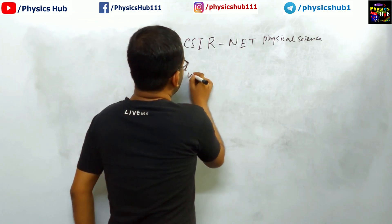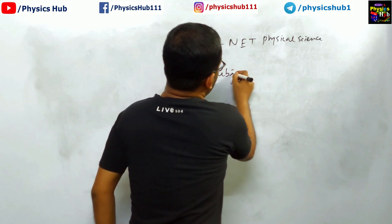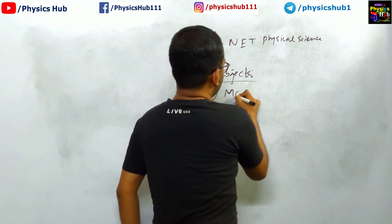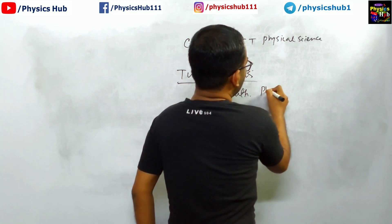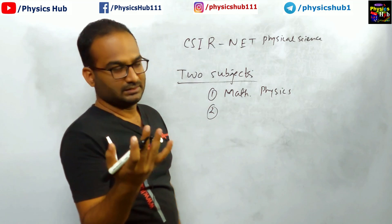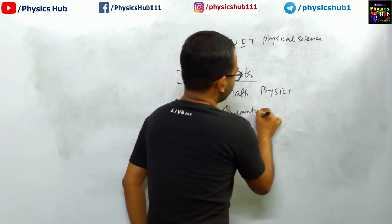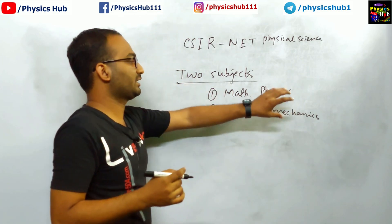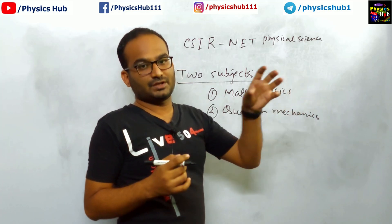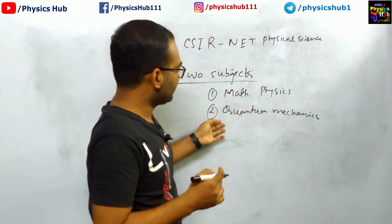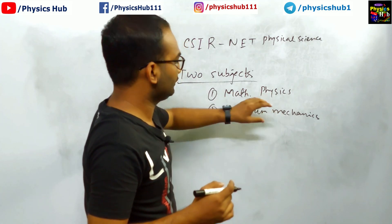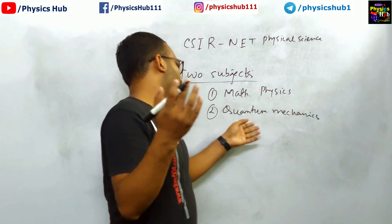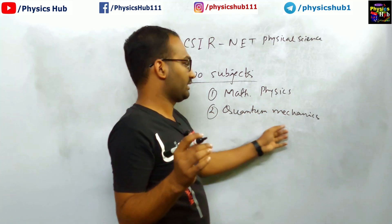The two subjects you should start with are: firstly, mathematical methods of physics — math physics in short — and secondly, quantum mechanics. Mathematical physics is like the backbone of all nine units in CSRNet physical science. The tools used in quantum mechanics will also be used in solid state physics, nuclear physics, and thermal and statistical physics.